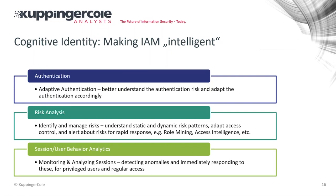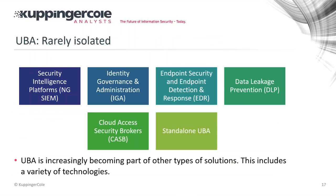There's also session or user behavior analysis in the privileged access management space, where we try to detect anomalies and immediately respond — because if a root account does things it shouldn't do, we need to know. A lot of this is based on UBA, which flows into next-generation SIEM platforms and is found in endpoint detection and response, DLP, and CASBs — but also increasingly as a part of identity governance itself.